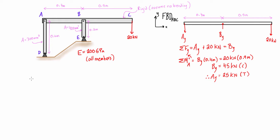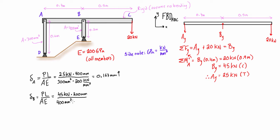So we can go and plug those into our formula here and solve for the displacements at A and B, and we find that the displacement at A is 0.167 millimeters up, and the displacement at B is 0.133 millimeters down.